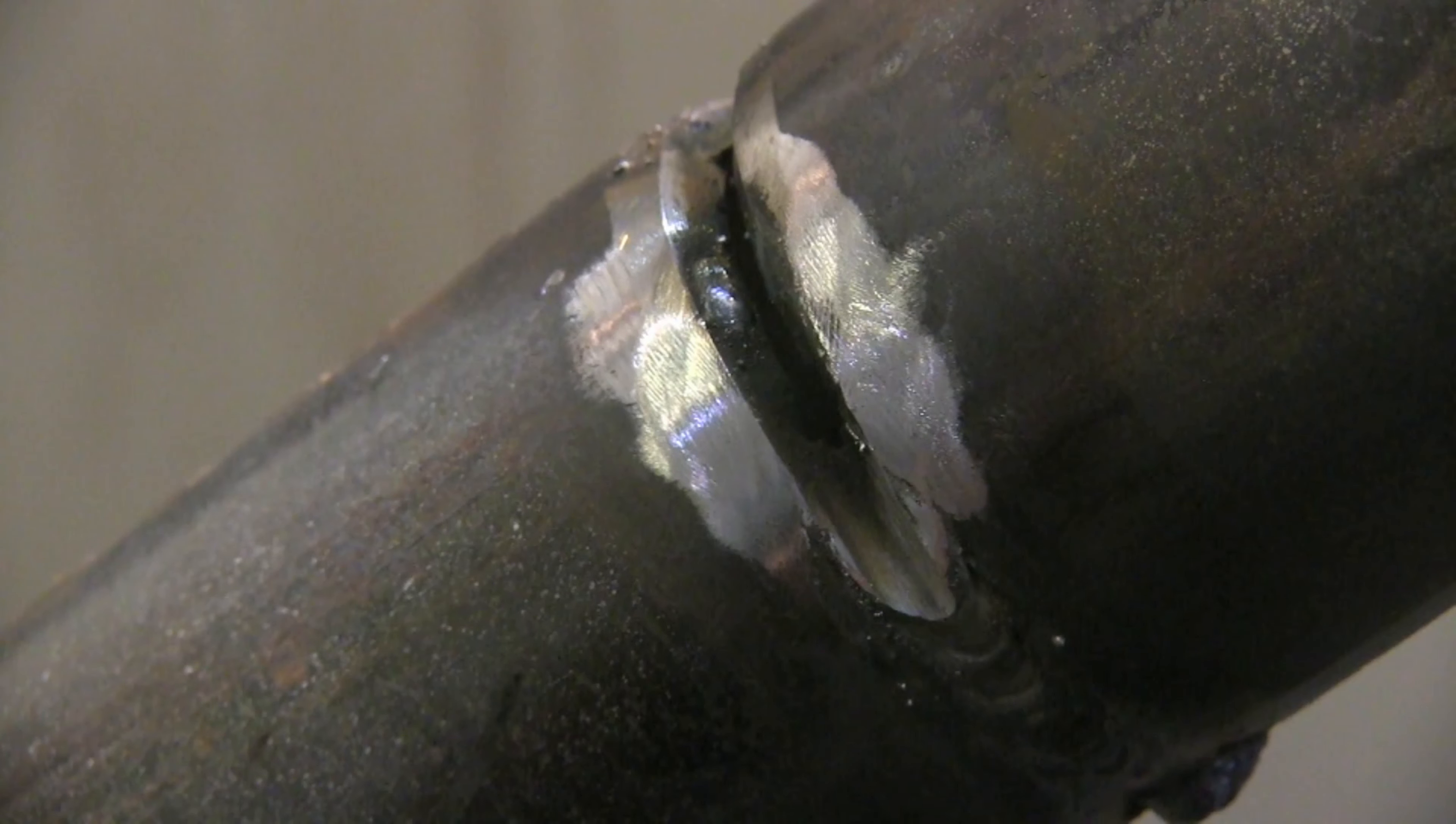You might notice that arc strike there inside the bevel. If you're going to have an arc strike, it's best to have them in there. You want to keep them all inside there and not outside on the pipe. This is 6010, not going to hurt anything.